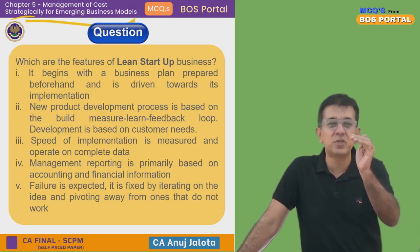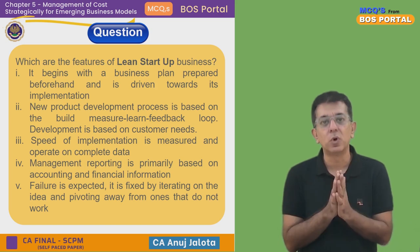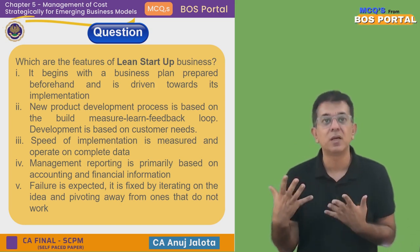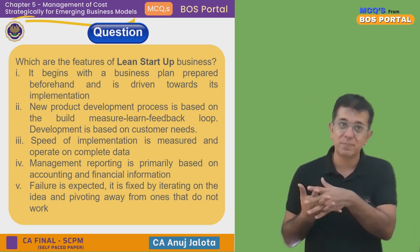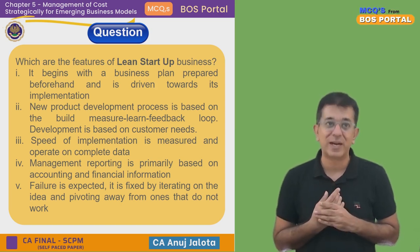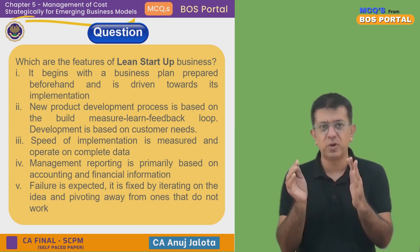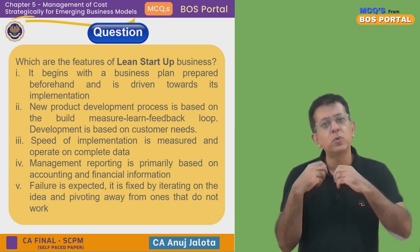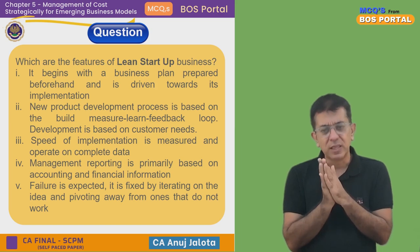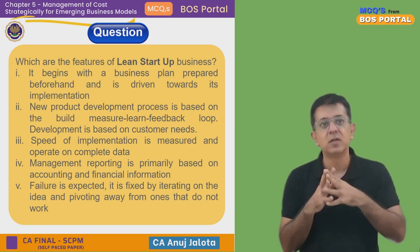Now let's see which option is a feature. Option one: it begins with a business plan prepared beforehand and is driven towards its implementation — mostly no. Startups do not have a business plan; they have a few things in mind but know they will have to keep experimenting because the customer might not accept what they think. So option one is false. Option two: new product development is based on the build-measure-learn feedback loop, based on customer needs — perfectly correct. Option two contradicts option one and is therefore correct.